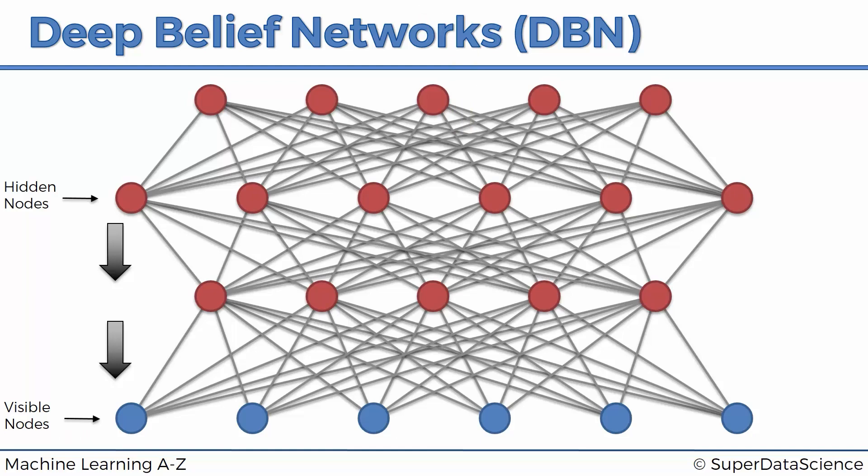So basically that's how it works. You stack up RBMs, you train them up, then once you've got the weights, you make sure that these connections only work downwards. Unfortunately, we won't go into too much detail on this because this is a very advanced topic. I just wanted to make sure that you are familiar with what a deep belief network looks like and what it entails.